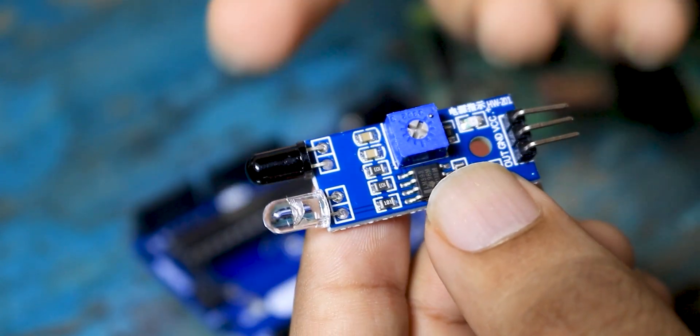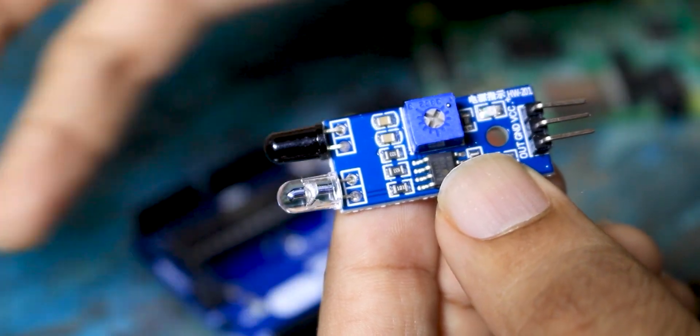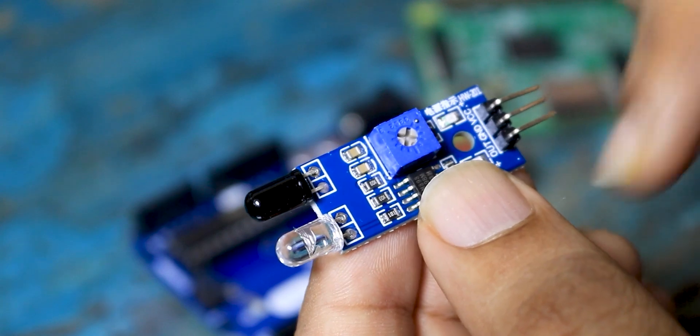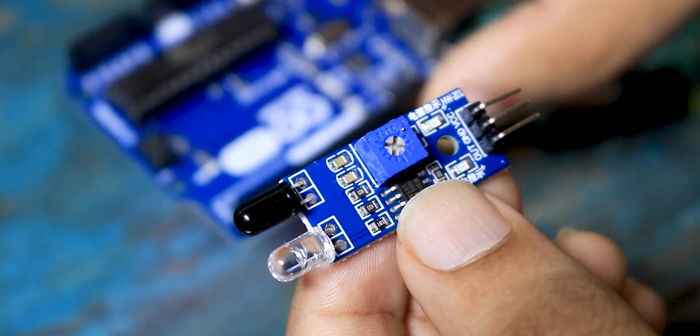So the way this thing works is really simple. When the object comes between the sensor or in front of the sensor it detects the output and the output falls to the low, by default the output will be high. So this is really simple to detect using the Arduino.